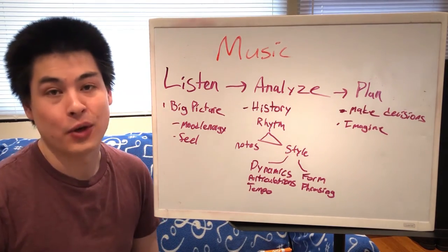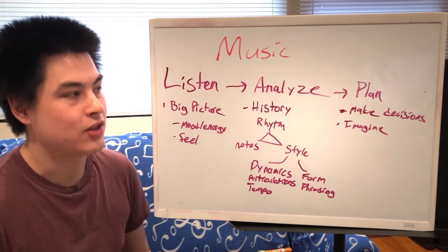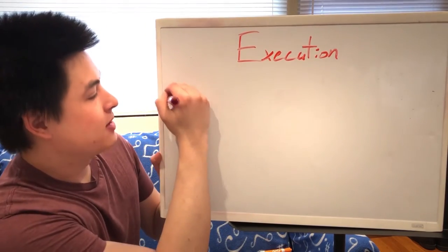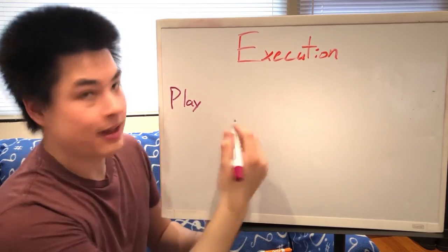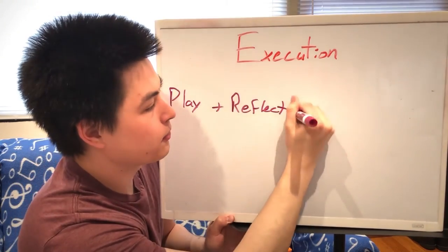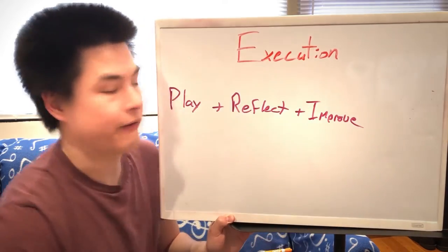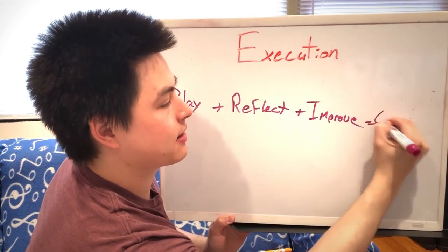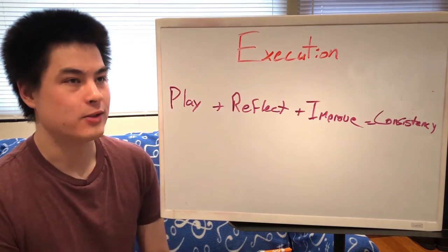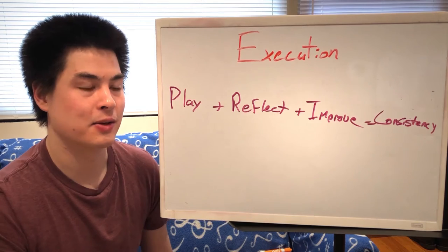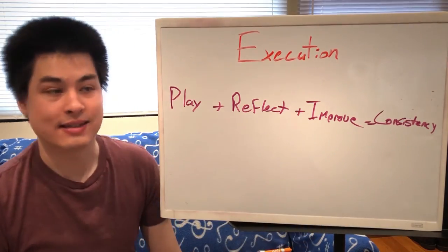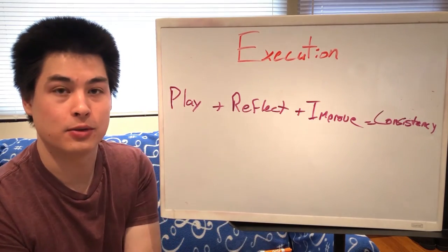That brings us to the next corner of the triangle: execution. Now that we've studied the music and have a plan, the next step is simply to play the music and see how it goes. Once we play, we reflect on it, then improve whatever needs to be improved. This is a never-ending process, and the goal is consistency. That's what makes professionals professional — they get the results they want very consistently. There's a great quote: 'An amateur will practice until they get it right; a professional practices until they can never get it wrong.'